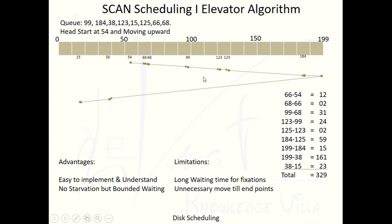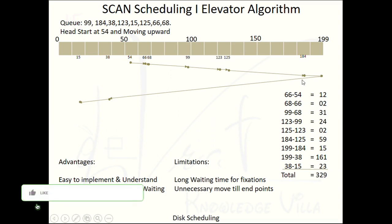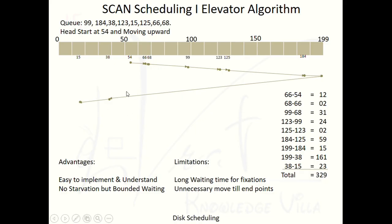In SCAN scheduling, whenever the head is moving upwards it satisfies all requests available along the path. The head moves up to the end of the track, then comes back in the return direction satisfying all requests along the way. One limitation is long waiting time, because the head reaches each position while performing reading and writing.